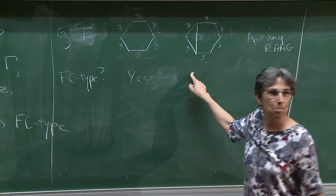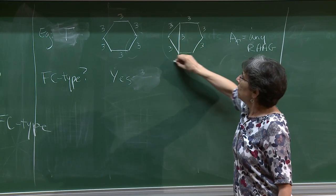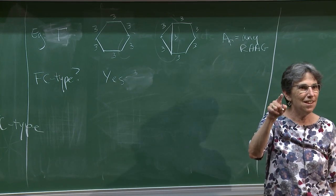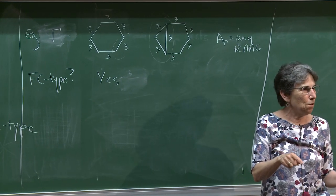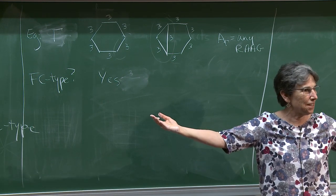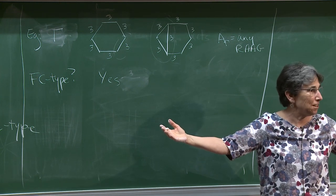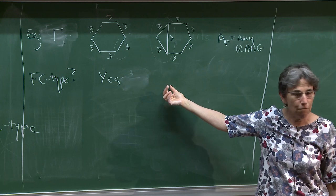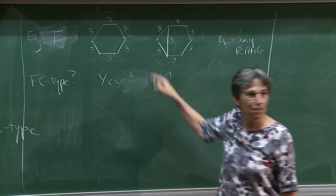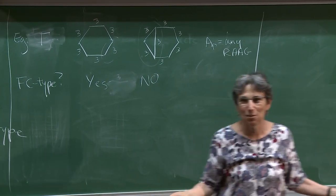What about the 3-3-3 triangle? This has a clique — those three vertices — and that 3-3-3 triangle is an affine Coxeter group which is infinite. This was that affine Coxeter group I used as an example of getting something infinite even though the m_{ij}'s are not infinity. So: no — it has a bad clique.